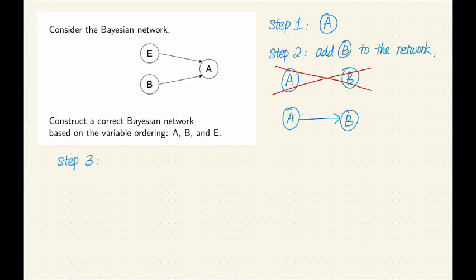Step number three, now we want to add E to the network. We already have A and B in the network. So we have a few possibilities here.